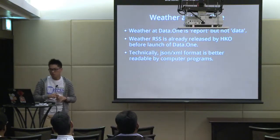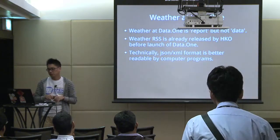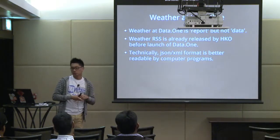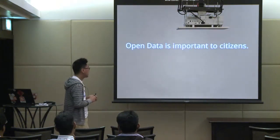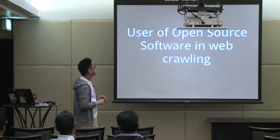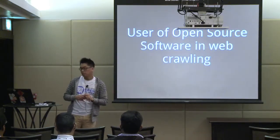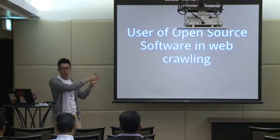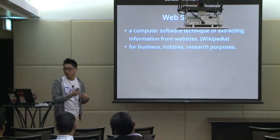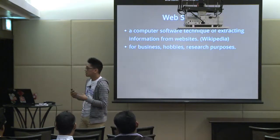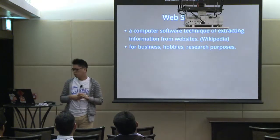Weather data from the Observatory is just a report format — it needs to be proper data. JSON or XML format is better for consumption by computer programs. So open data is important to citizens. I use open source software to collect useful data from those reports. Web scraping is intended to extract information from websites — it can be for business, hobby, or research purposes.